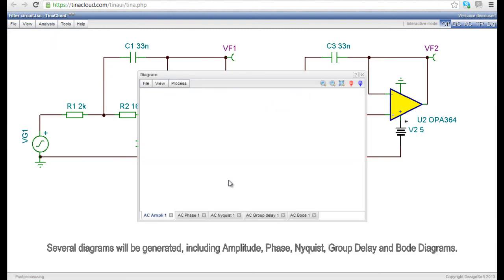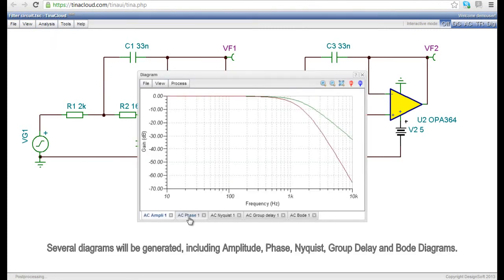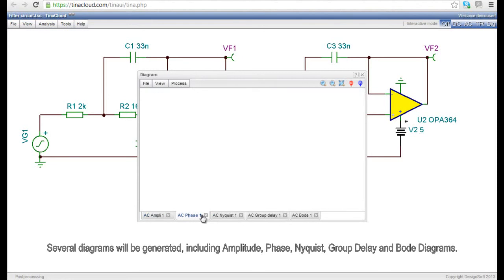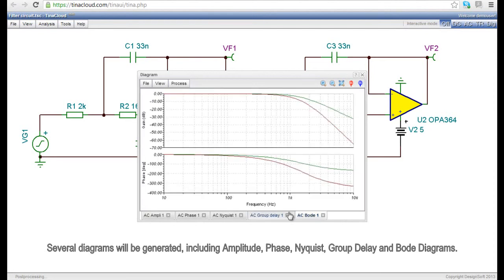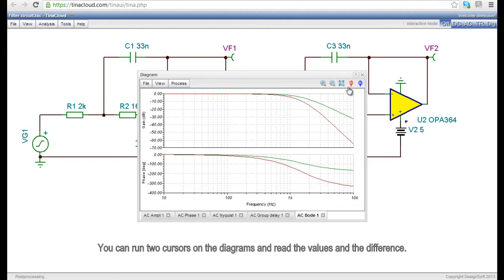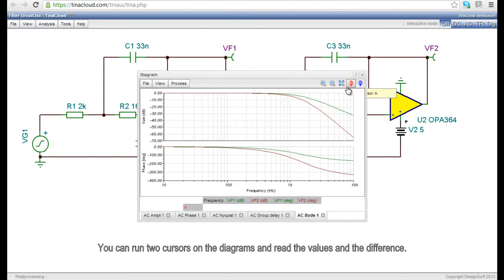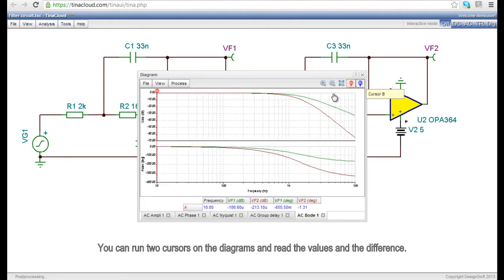Several diagrams will be generated including Amplitude, Phase, Nyquist, Group Delay and Bode diagrams. You can run two cursors on the diagrams and read the values and the difference.